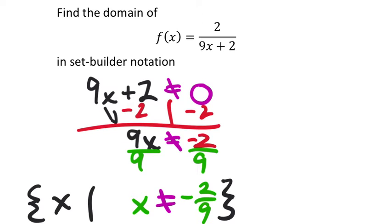But it's just x such that then we've got the inequality right there. x is good in the domain so long as x is not negative 2 9ths.